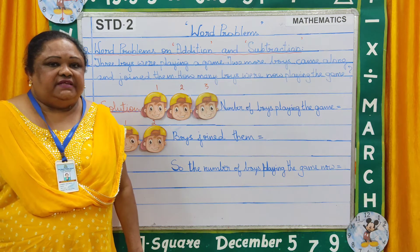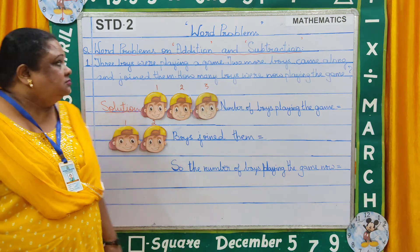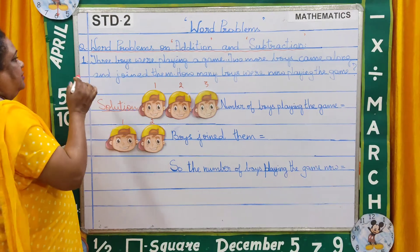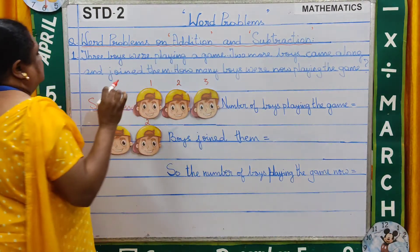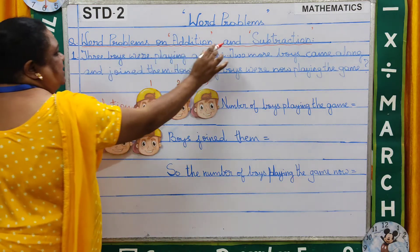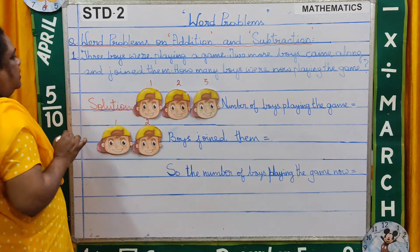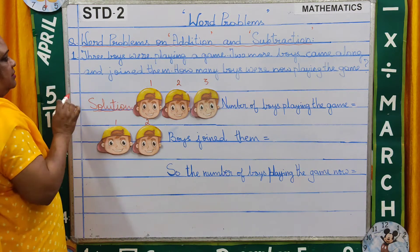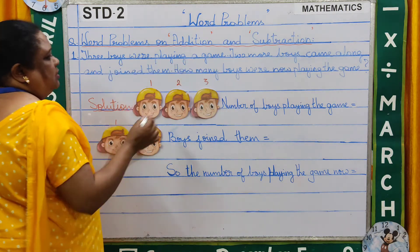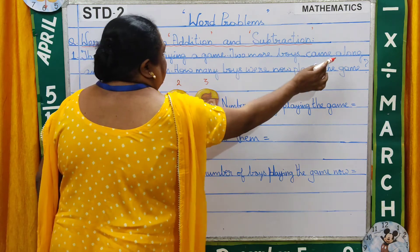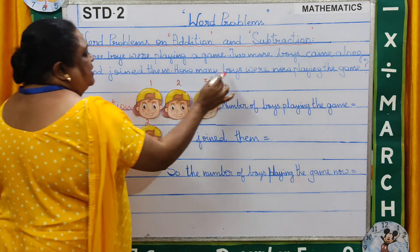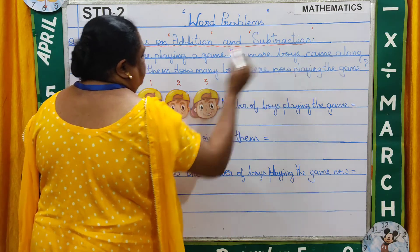So please look at the board carefully. Word problems. Question number 1: Three boys were playing a game. Two more boys came along and joined them. How many boys were now playing the game?